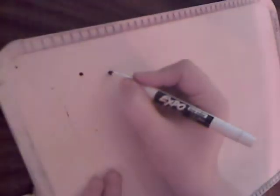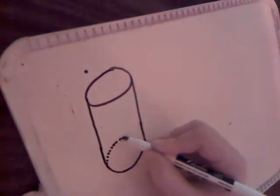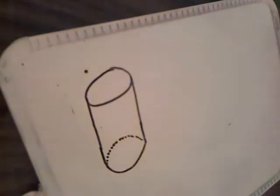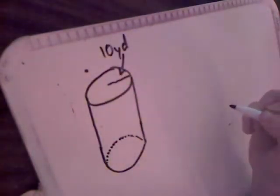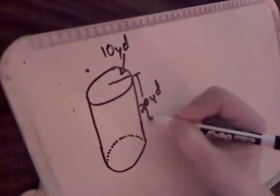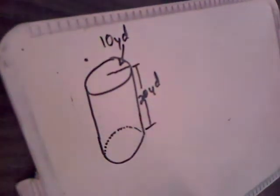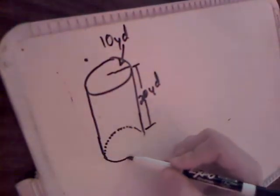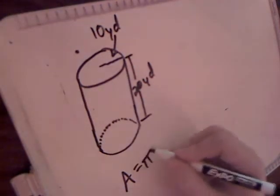Lastly, we're going to hop on over to our cylinder. We have our cylinder — this one is probably not going to be drawn to scale, but life goes on. All figures are always a little bit off, especially when we're drawing them on a whiteboard. The radius is 10 yards and the height is 20 yards. To find the surface area, we're going to start with the circles. The area of a circle is pi r squared.